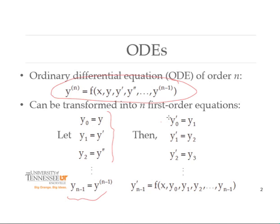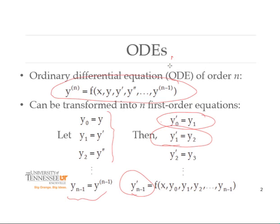If we make those variable substitutions and exploit the relationship between derivatives, then y prime of y-zero is y-one. Similarly, y-one prime is the same as the second derivative, and another name for the second derivative is y-two. We continue that pattern until the derivative of y-sub-(n minus one) equals the nth derivative, which is given by the original equation. What we've produced is very simple first-order ODEs, with the last one being more complicated because it involves the original ODE itself. Every row in this system involves only the first derivative — that's why it's called a system of n first-order differential equations, achieved through variable substitutions.